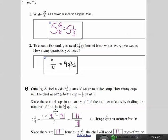And then in my last problem here, it's the same type of problem. I need 2 and 3 quarter quarts of water to make a soup. How many cups will the chef need? So I know that 1 cup is equal to 1 fourth of a quart.